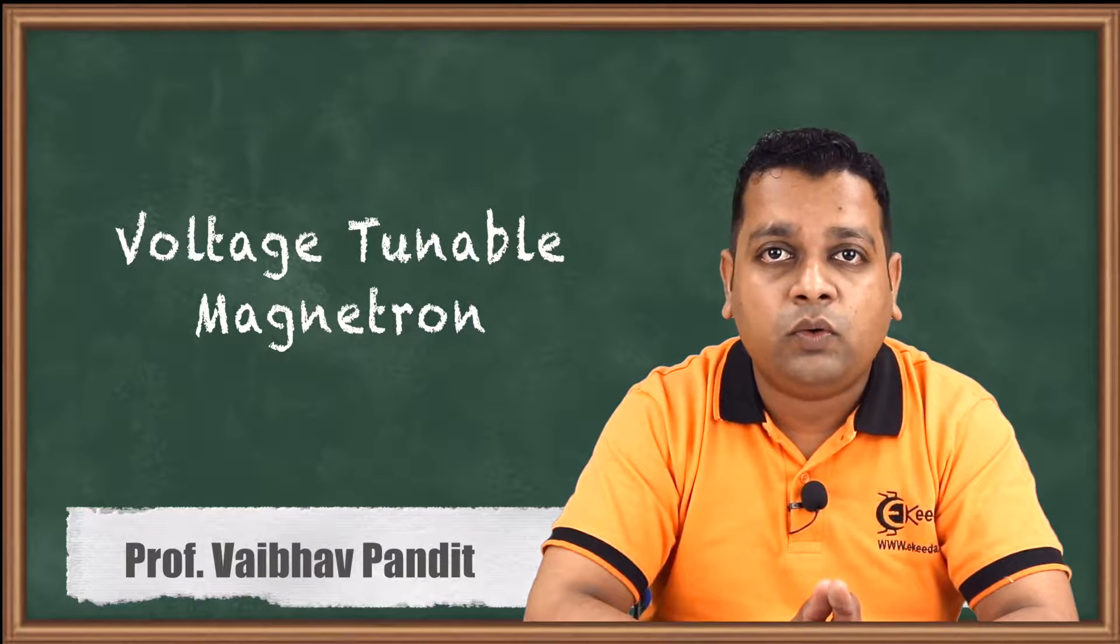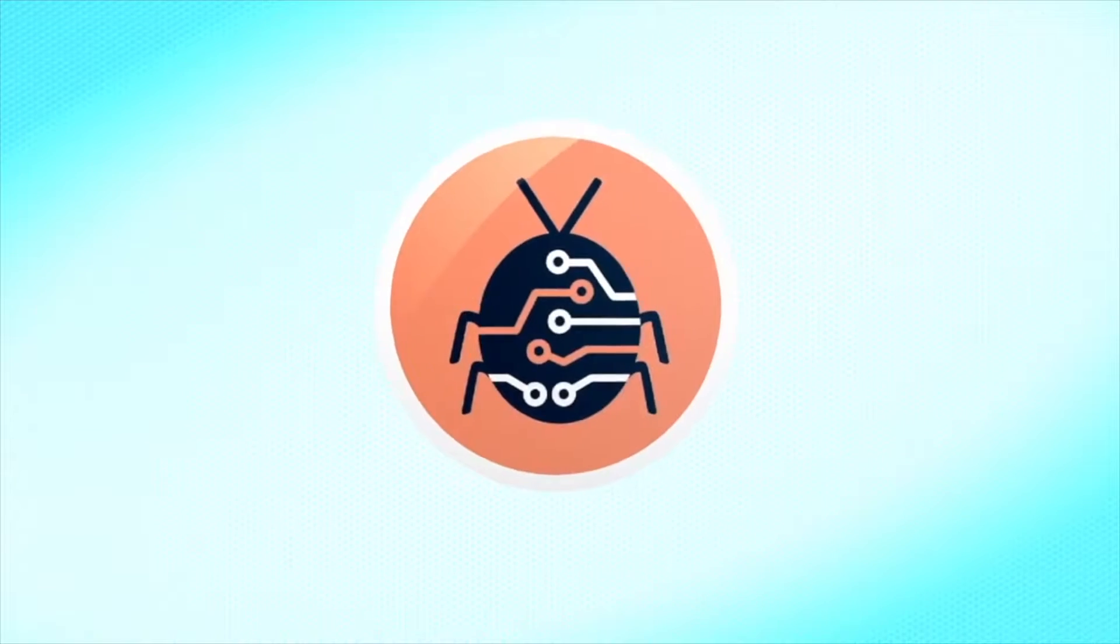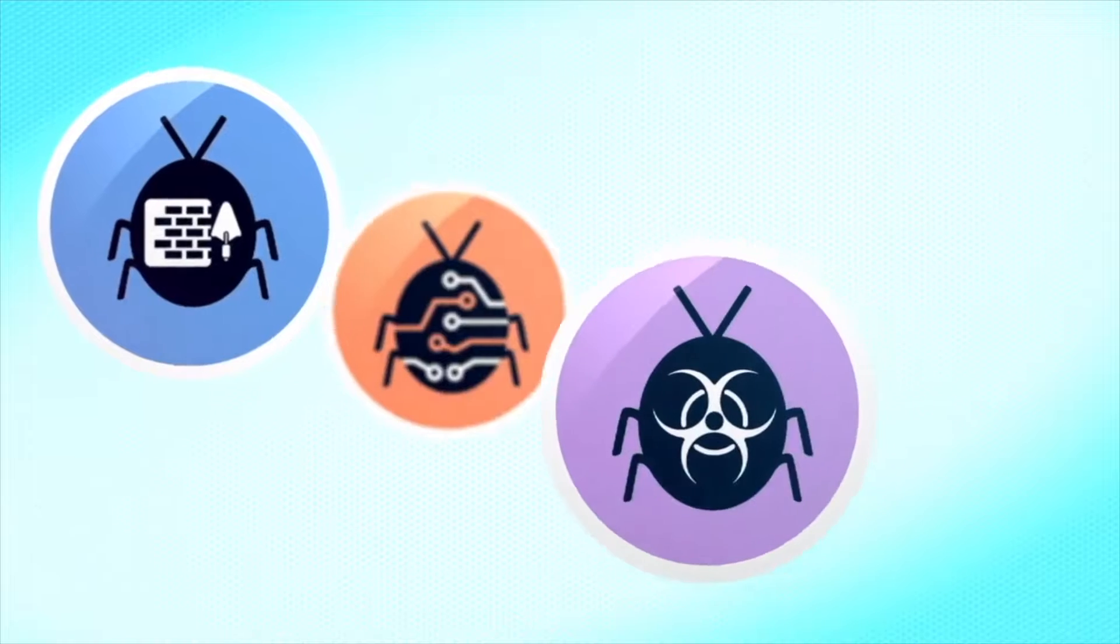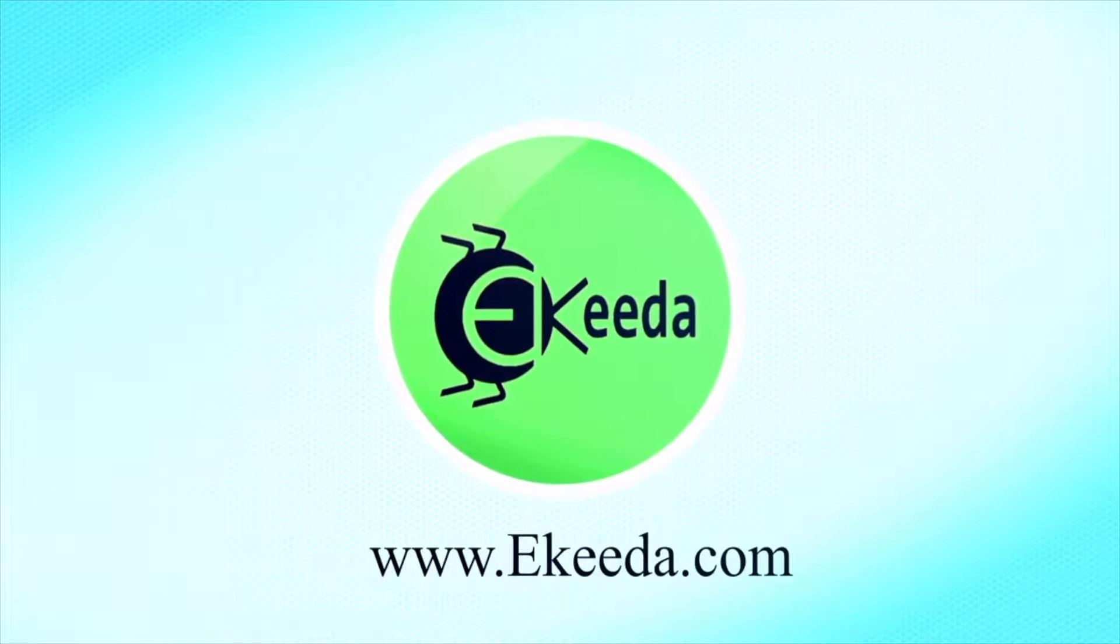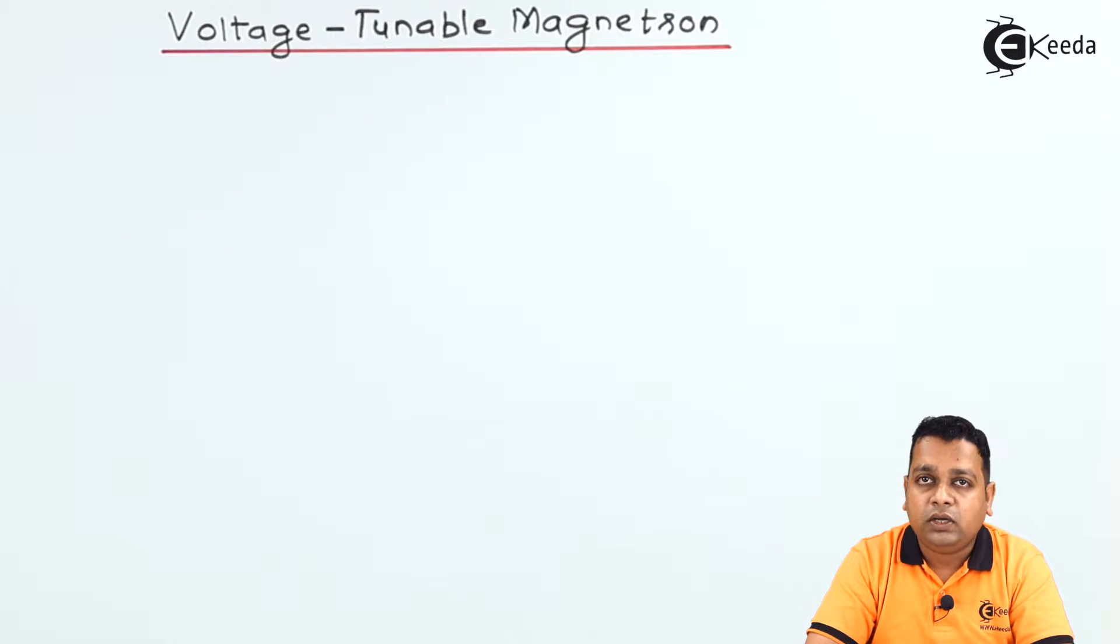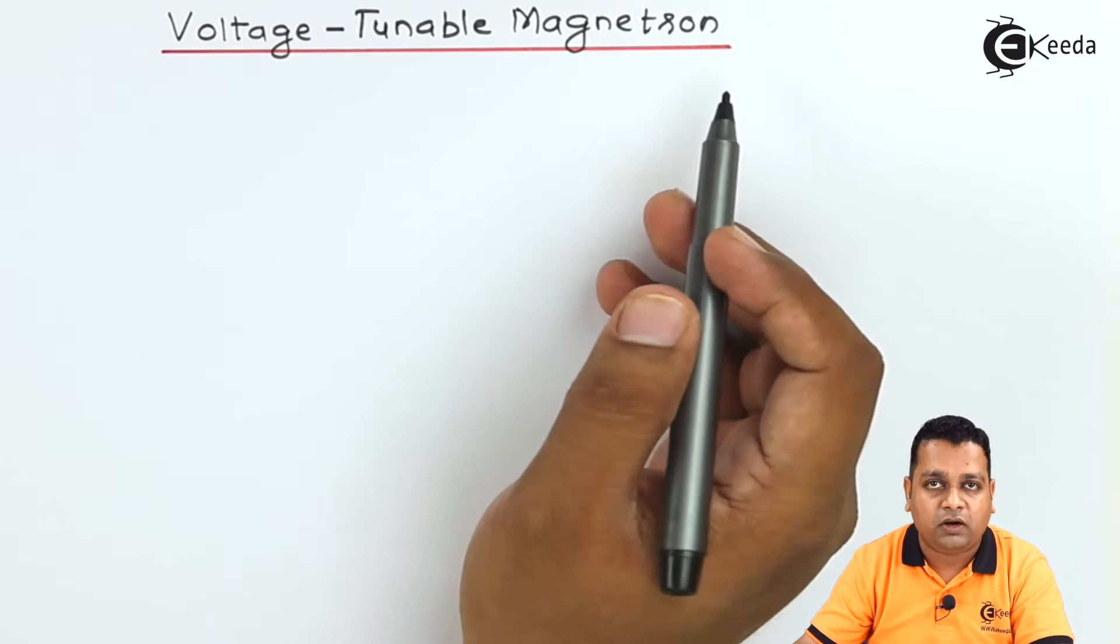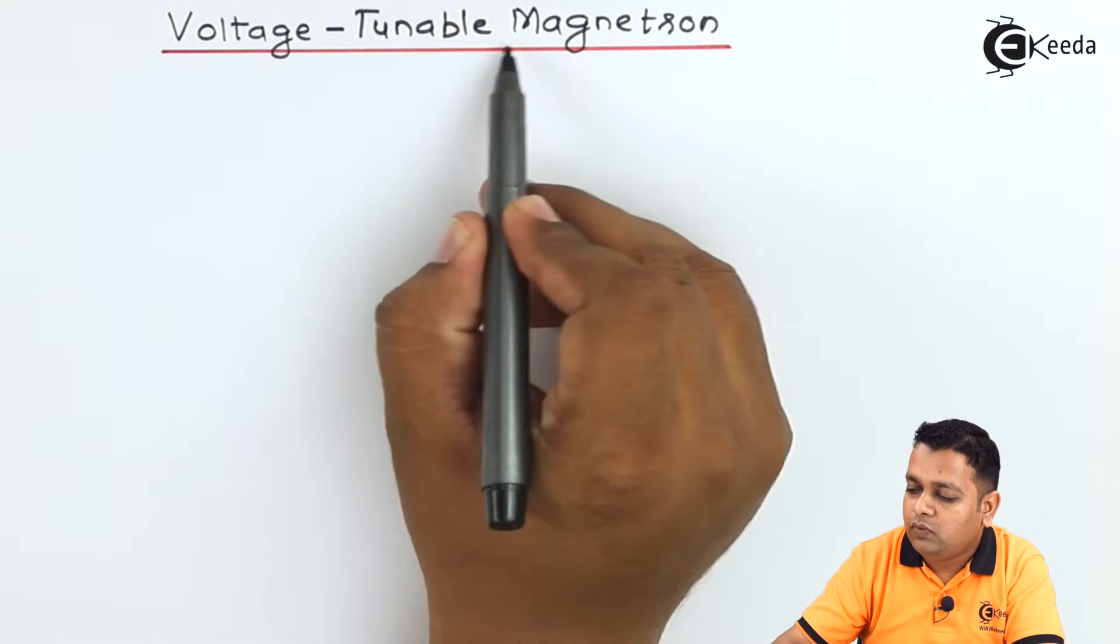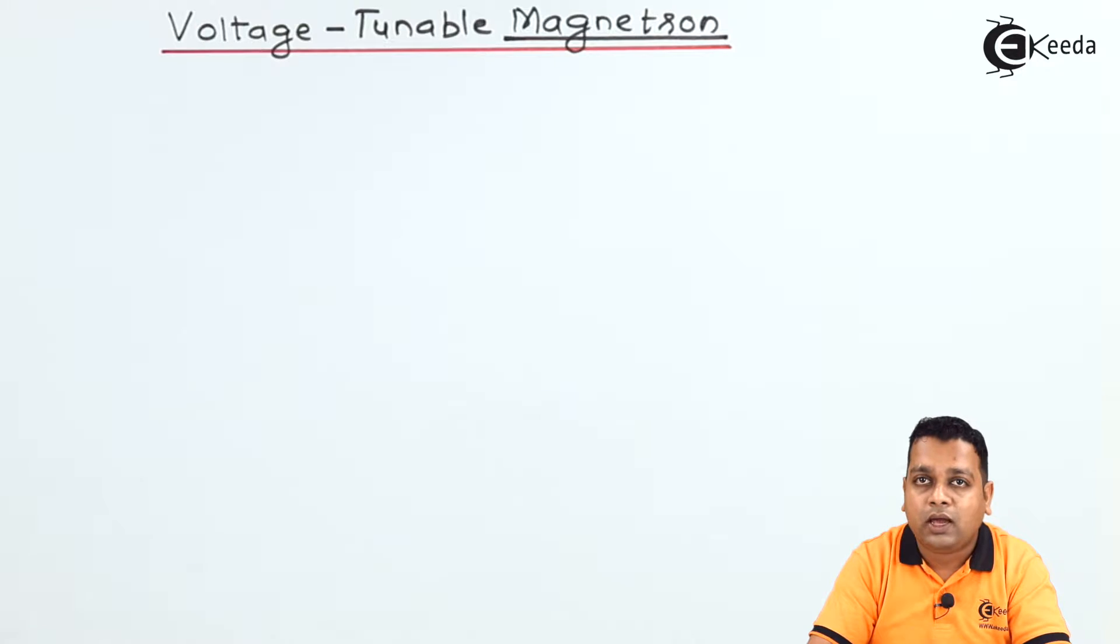Now let us have the details of what exactly the voltage tunable magnetron is. So here we begin with our topic, the topic is voltage tunable magnetron. As we have the term magnetron, the device is of course having cathode and anode.